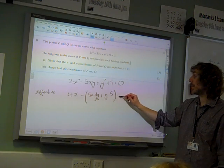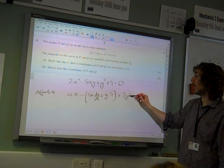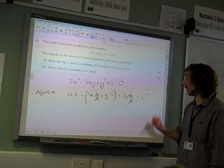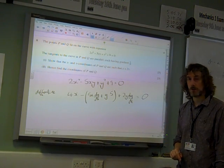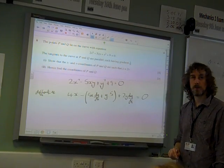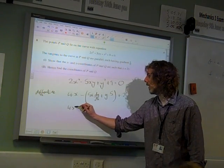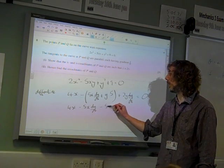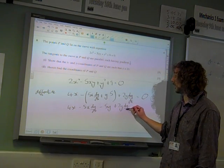y squared gives 2y dy/dx. Nine goes to zero, and zero goes to zero. So we've got 4x minus 5x dy/dx minus 5y plus 2y dy/dx.